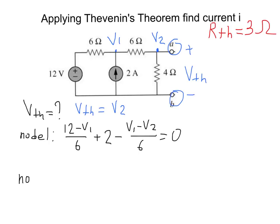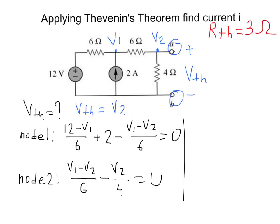For node 2, the current coming in from the 6 ohm resistor is (V1 minus V2) over 6, which is positive because it's coming in. And one more current through the 4 ohm resistor going out, so minus V2 over 4, equals zero. Solving these two equations, we find the nodal voltage V2, which equals 6 volts.